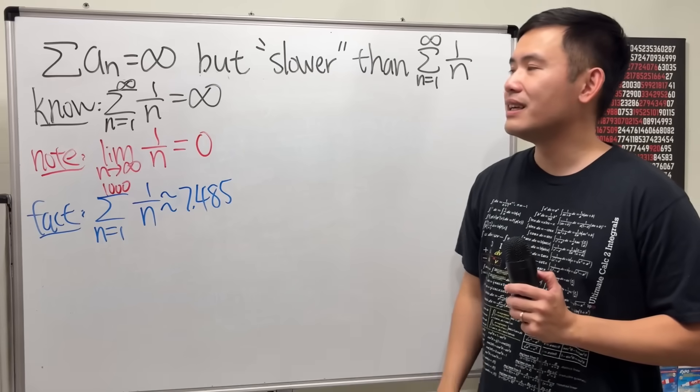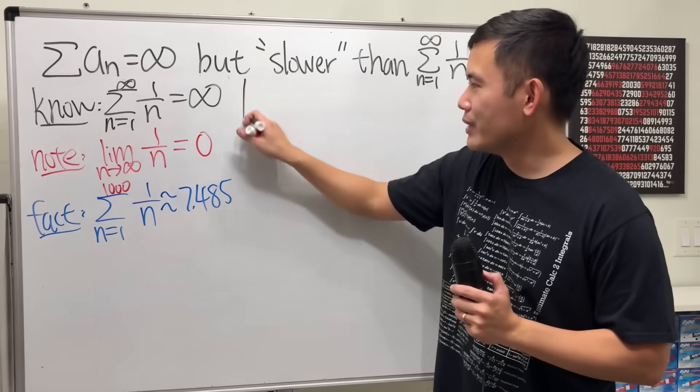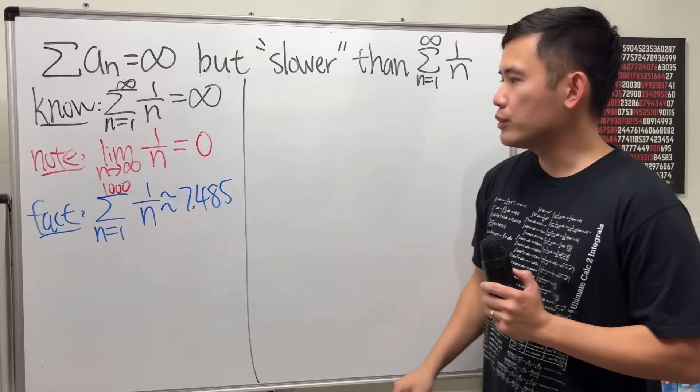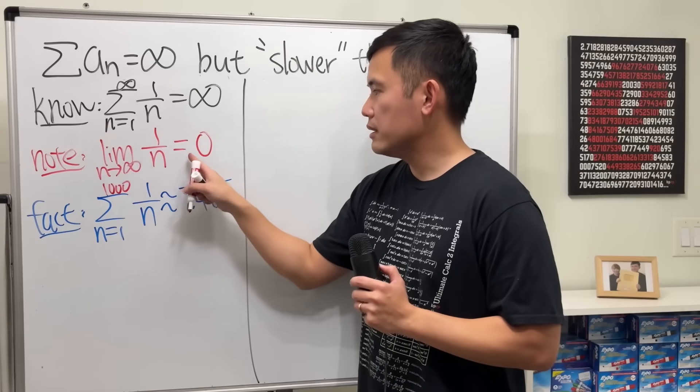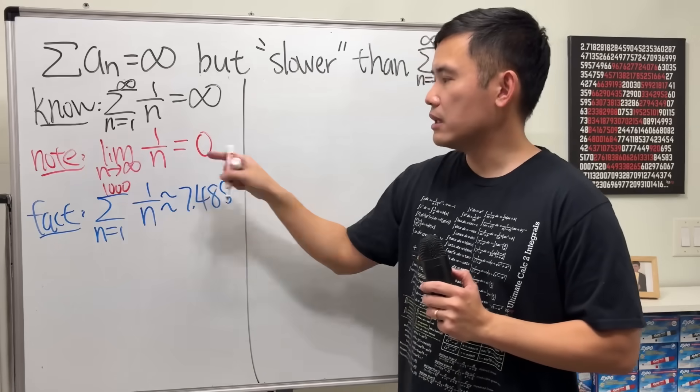but it's not too much fun, right? So let's see how we can possibly do that. First off, notice that 1 over n, the limit for that is equal to 0.